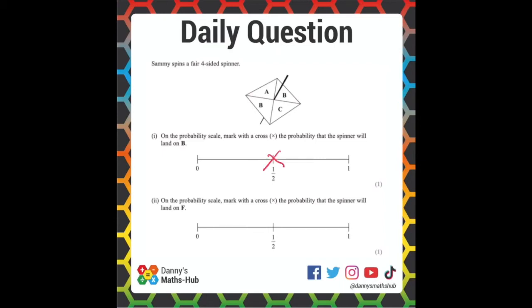On the probability scale, mark with a cross the probability that the spinner will land on F. Well, there is no F, so that's impossible, so that'd be zero.